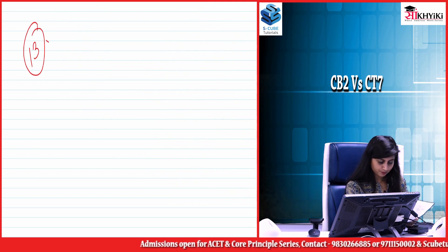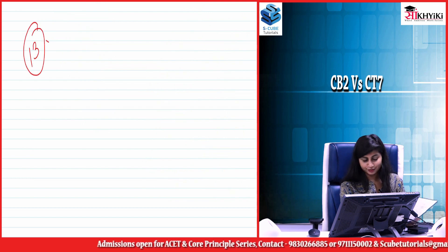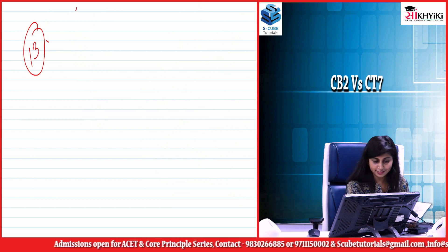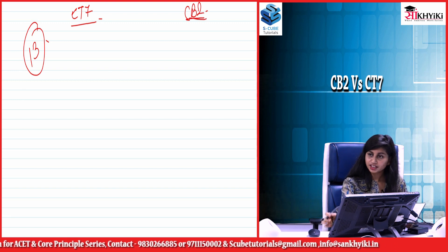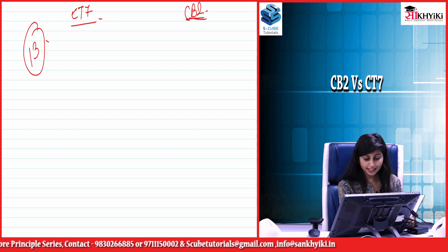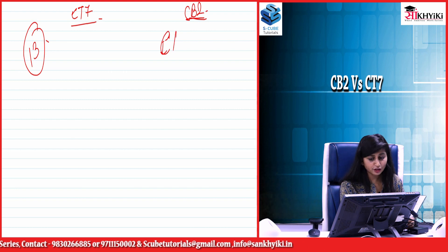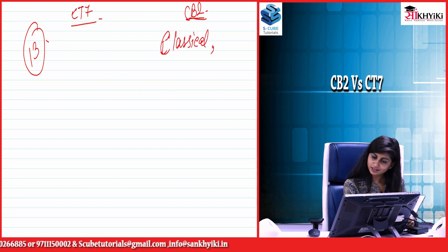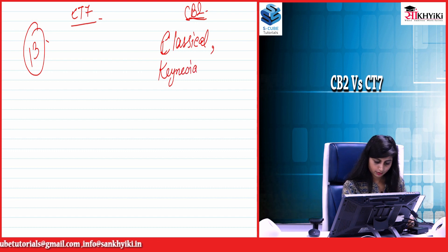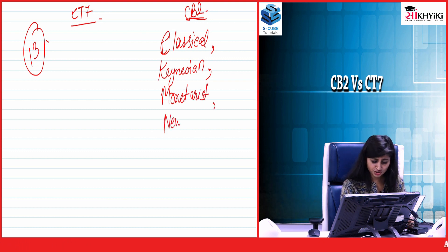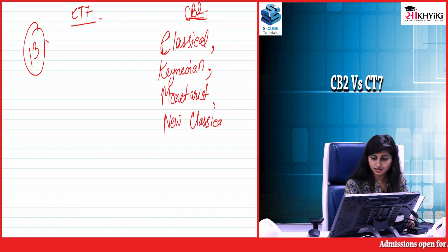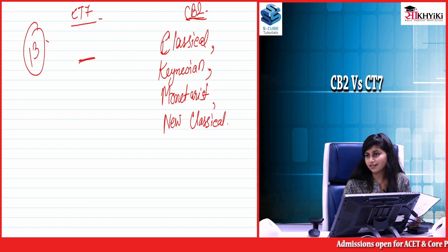The next topic has no trace in CT7 whatsoever, but in CB2 there are full chapters on the schools of economic thought: the classical school, the Keynesian school, the monetarist school, the new classical school, and the Austrian school, among others.